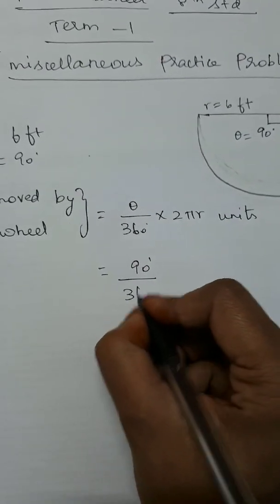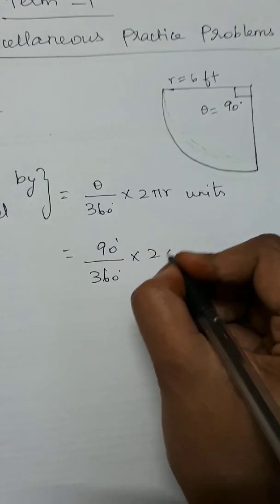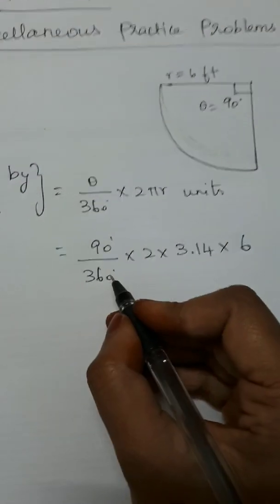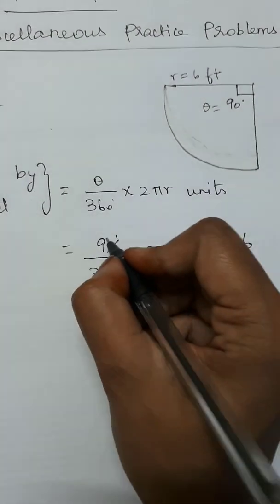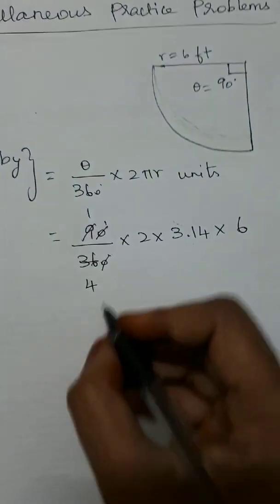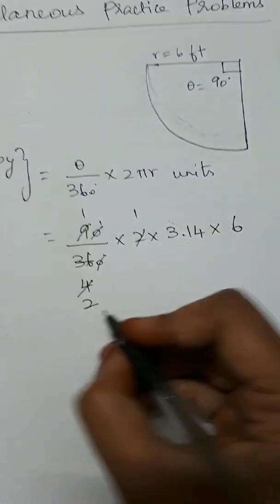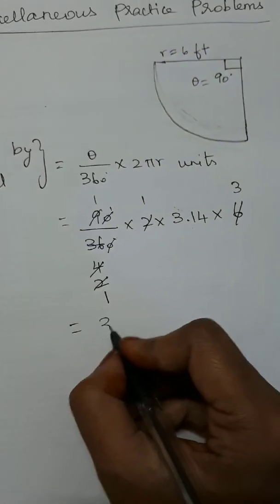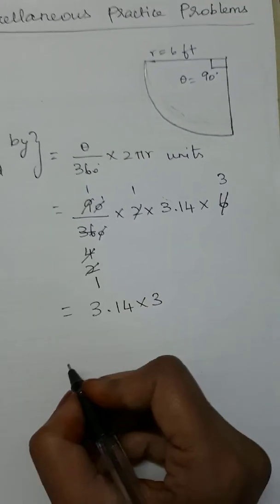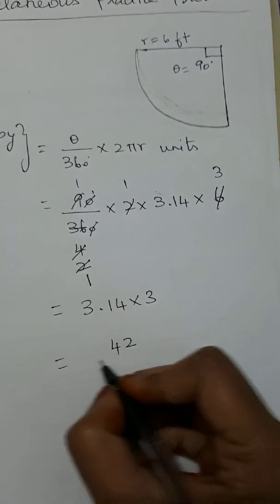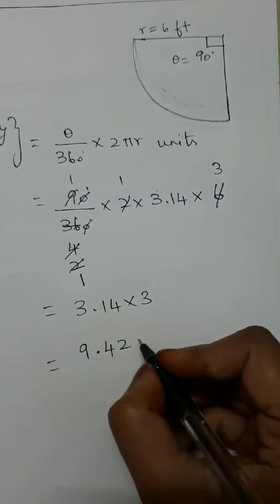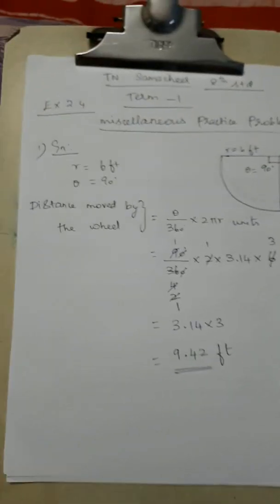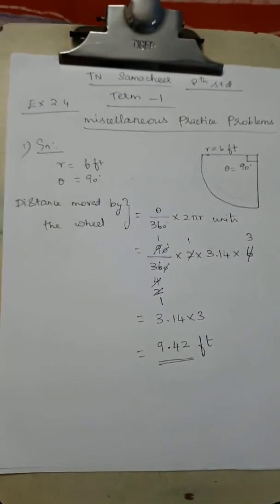We substitute: (90/360) × 2 × 3.14 × 6. Cancelling, we get 3.14 × 3, which equals 9.42. So the distance moved by the wheel is 9.42 feet.